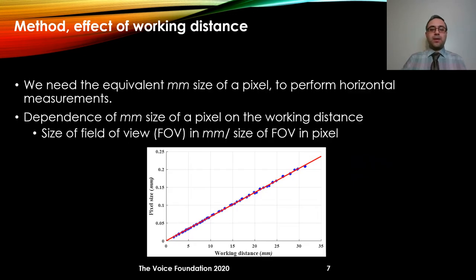We collected a set of benchtop recordings from grid papers at multiple working distances. To perform horizontal measurement, we need to determine the equivalent millimeter size of a pixel. We measured the size of the field of view in millimeters using benchtop recordings, then divided that by the size of the field of view in pixels. The result shows a linear relationship: as working distance increases, the pixel size also increases.